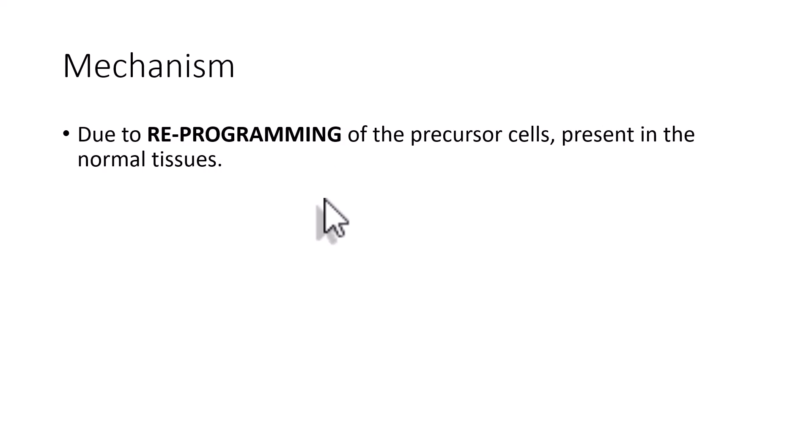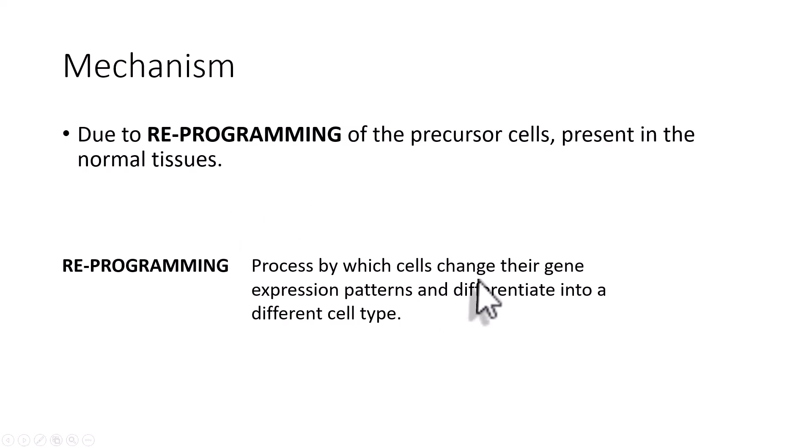The main mechanism for metaplasia is reprogramming of the precursor cells which are present in our normal tissues. It is not that the squamous cell suddenly gets transformed into a columnar cell or vice versa. It is actually that the particular cell, because of stress, may die, and then the precursor cells are reprogrammed for conversion into a better cell. Reprogramming is a process by which the cells change their gene expression patterns and differentiate into a different cell type.